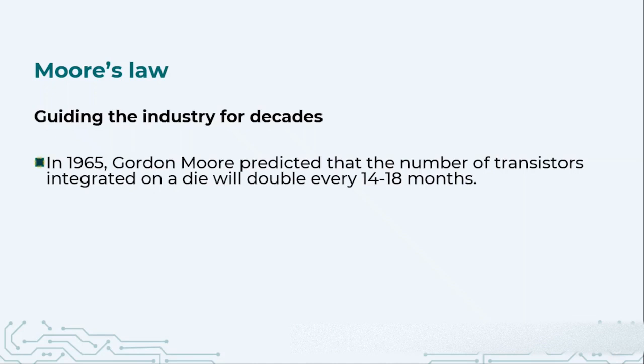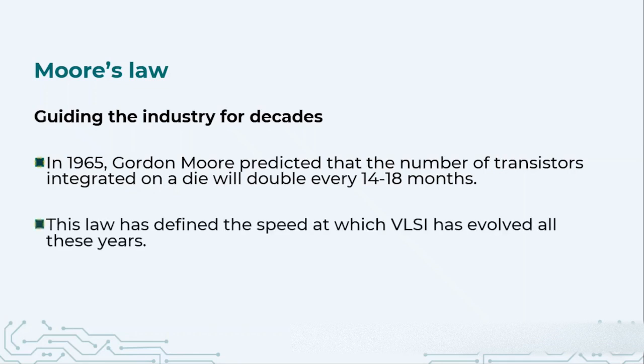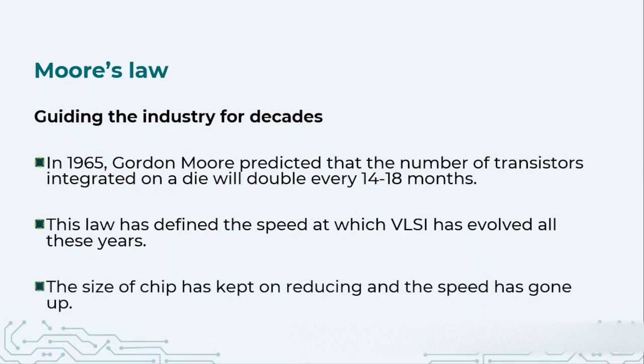So he predicted an exponential growth for the VLSI industry. This law also defined the speed at which the VLSI will evolve and has evolved throughout these years. It said that your chip size will keep on going down and the speed of the circuits will keep on going up. We are going to produce compact and faster chips every year.